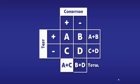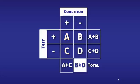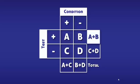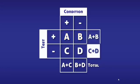In box A plus C we have all the people with the condition, including the true positives and the false negatives. In box B plus D we have all the people without the condition, including the false positives and the true negatives. In box A plus B we have all the positive tests, including the true positives and the false positives. In box C plus D, we have all the people with the negative tests, including the false negatives and the true negatives.